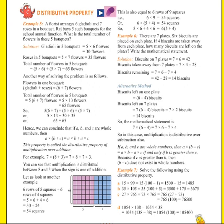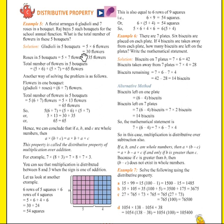First, we solve for gladioli flowers. Gladioli in five buckets equals five into six flowers — five because there are five buckets, and six is the number of flowers. Five into six equals thirty flowers. So there are thirty gladioli flowers in total.